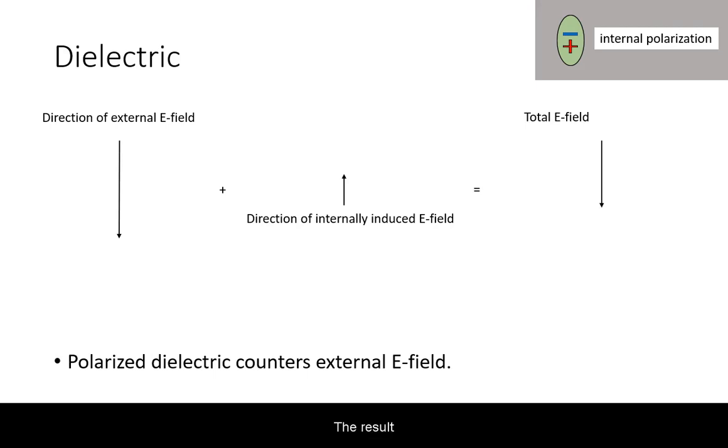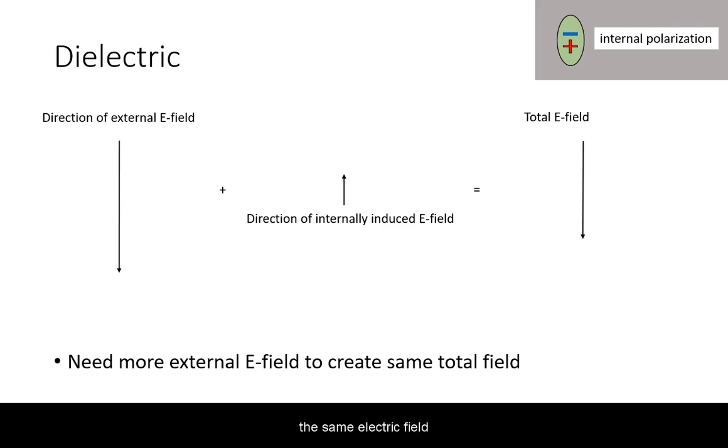The result is going to be an altered total electric field. This means that to create the same electric field as before, we need to increase our initial external electric field from the capacitor.